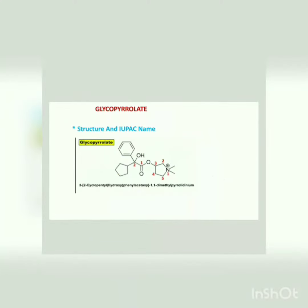Here is glycopyrrolate. Glycopyrrolate is a synthetic quaternary ammonium salt that is an anticholinergic agent. It is used to treat gastrointestinal conditions associated with intestinal spasm and to decrease secretions during anaesthesia.